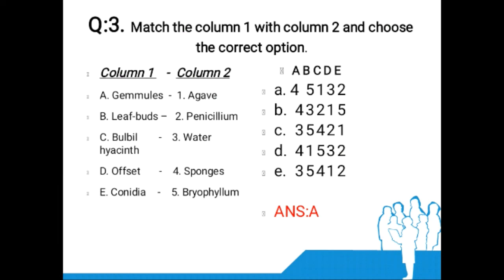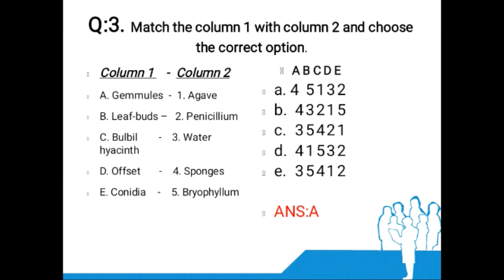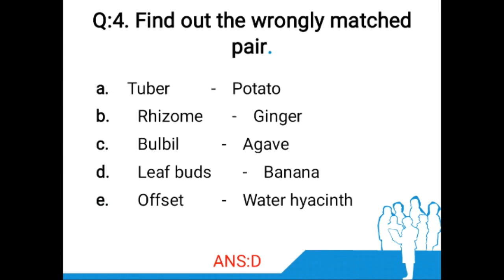The options are: A: 4-5-1-3-2, B: 4-3-2-1-5, C: 3-4-4-2-1, D: varies. The answer is option A. The common asexual reproductive structures in sponges are gemmules, and in Penicillium are conidia. The vegetative propagules in Agave, water hyacinth, and Bryophyllum are bulbil, offset, and leaf buds respectively.